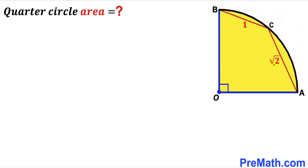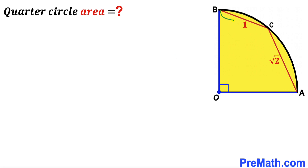Welcome to pre-math. In this video we have these two chords AC and BC placed inside a quarter circle with center O, as shown in the diagram. The chord AC is √2 units long, and chord BC is 1 unit. Our task is to calculate the area of the yellow shaded quarter circle.